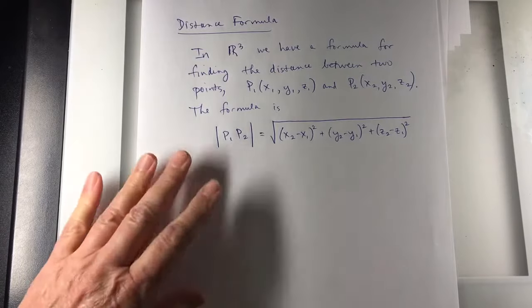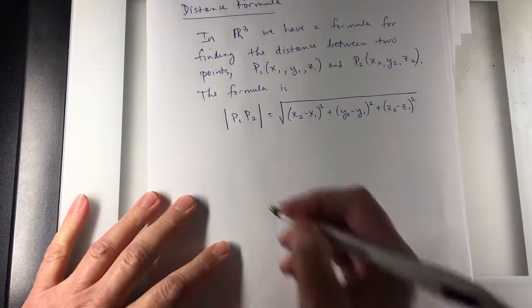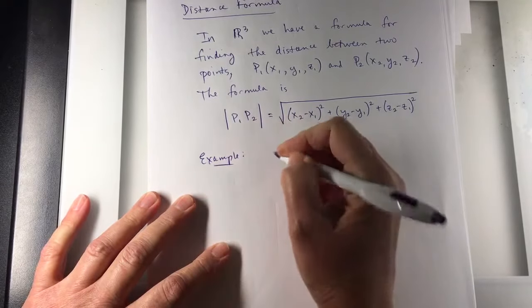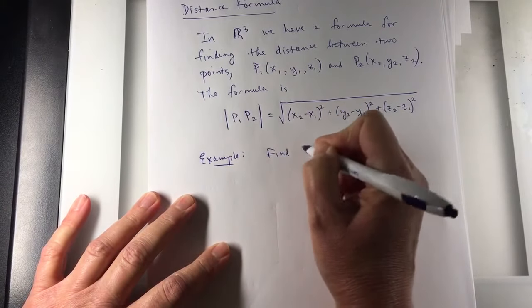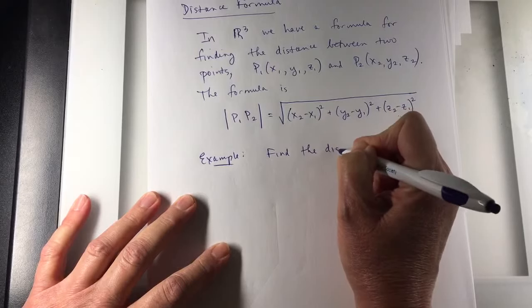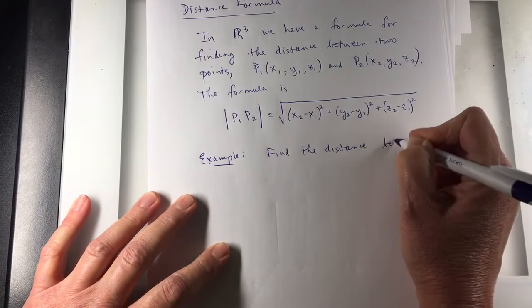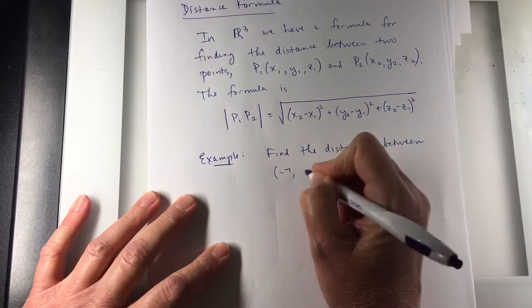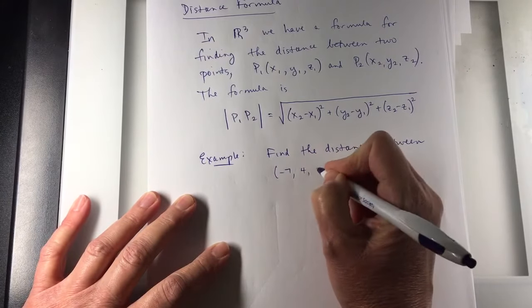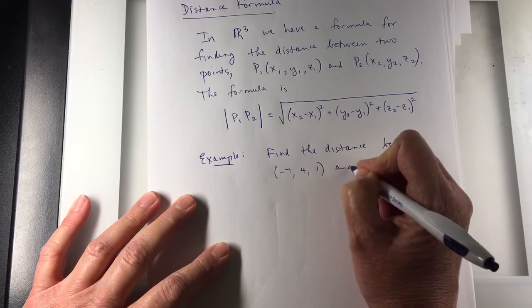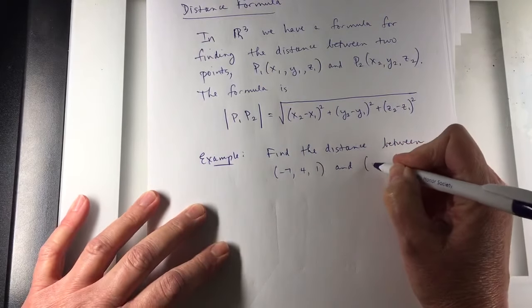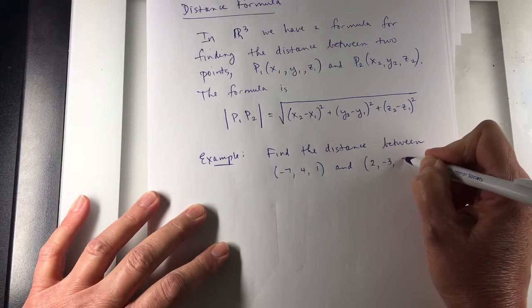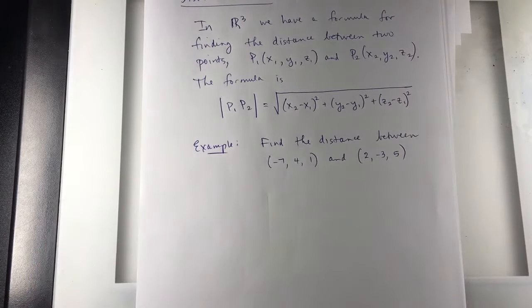Here's an example. Find the distance between these two points: negative 7, 4, and 1, and 2, negative 3, 5. Okay, I just made those up.